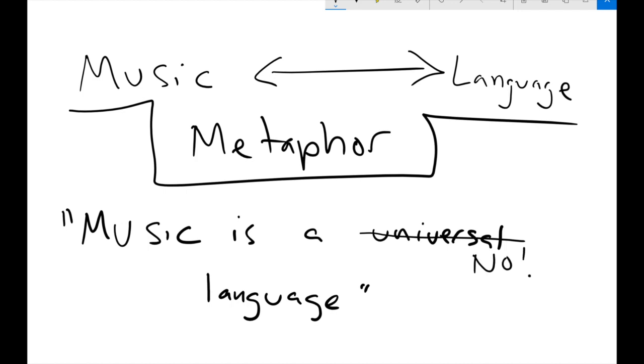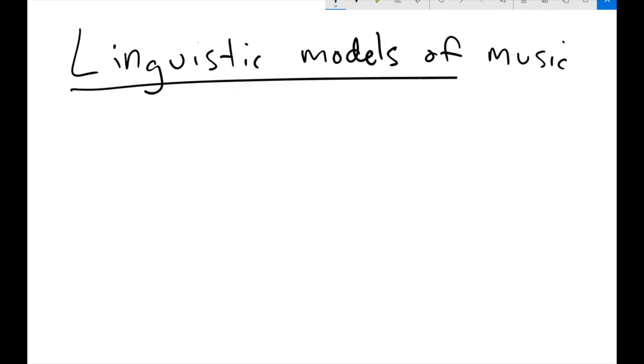But what I'm interested in today is the ways that it is and is not in language. And a lot of people have made different kinds of arguments about the ways in which music may or may not be related to language. So, one of these ways in which the common association is made is linguistic models of music.